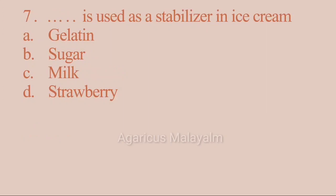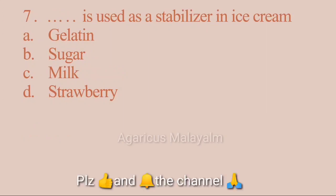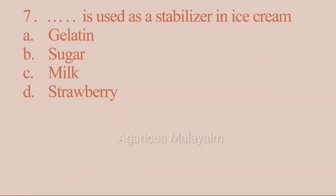Seventh question: Which dash is used as a stabilizer in ice cream? Answer options: Option A, Gelatin; Option B, Sugar; Option C, Milk; Option D, Strawberry. Correct answer: Option A, Gelatin — a protein of animal origin.